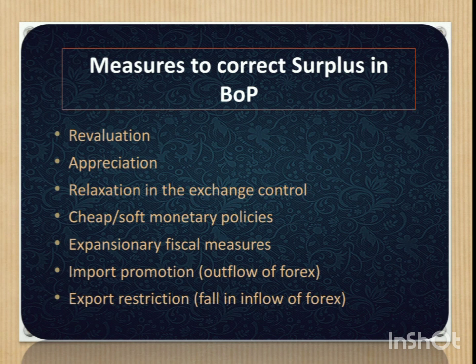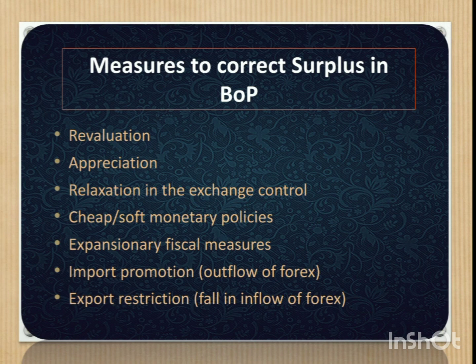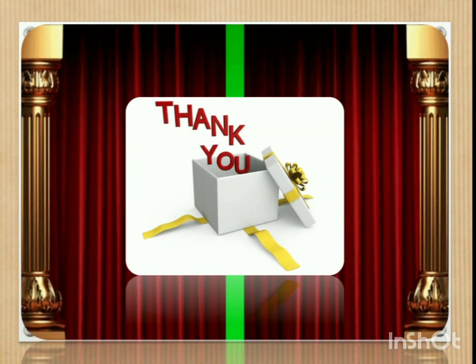Next, measures to correct surplus in balance of payments. Most nations are happy with balance of payment surplus because receipts are greater than payments. However, persistent balance of payment surplus is not a common feature of the modern world. The important measures to regulate balance of payment surplus are: revaluation, appreciation, relaxation in exchange control, cheap or soft monetary policies, expansionary fiscal measures, import promotion, and export restriction for a fall in inflow of foreign exchange. Happy learning folks. Thank you.